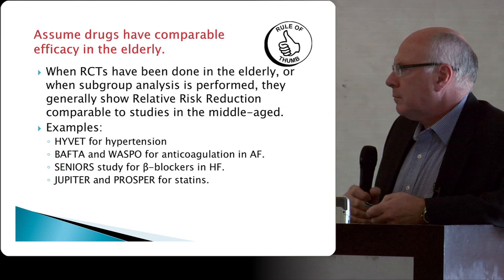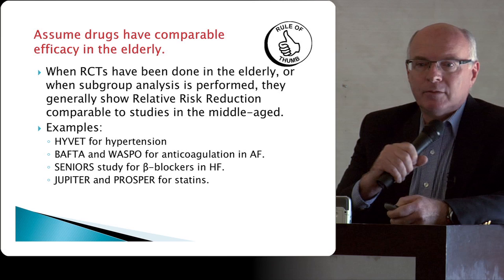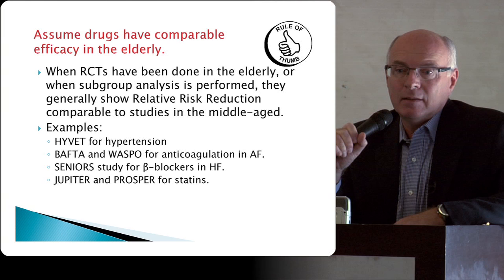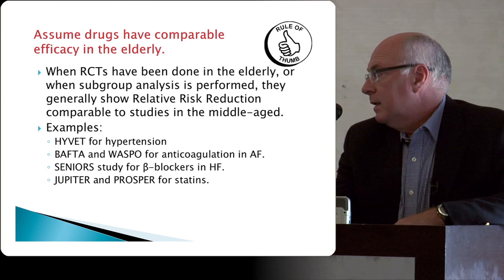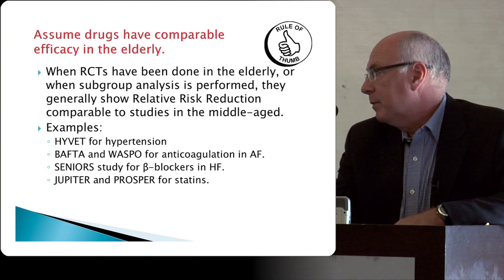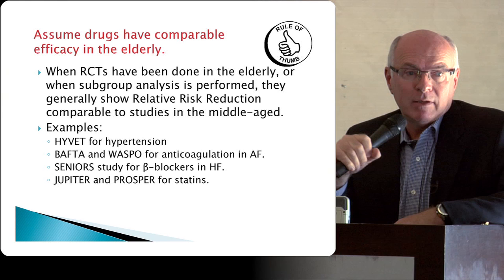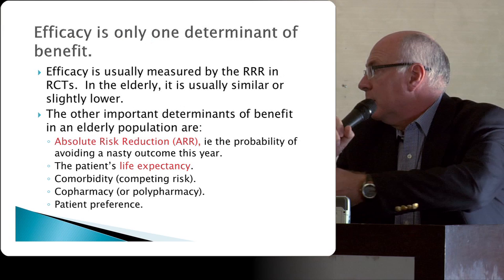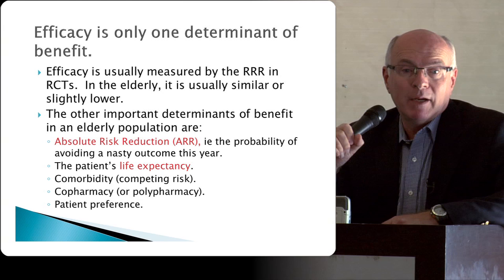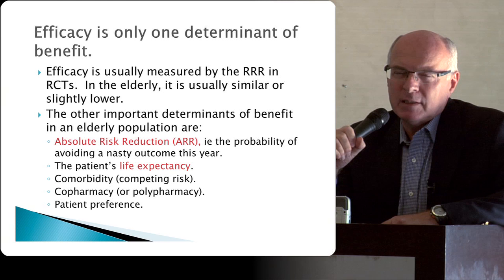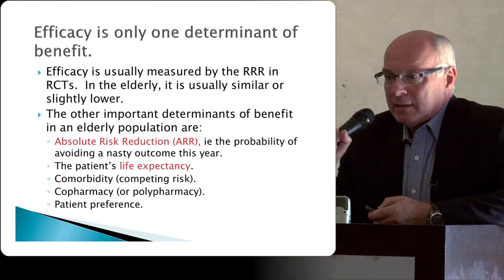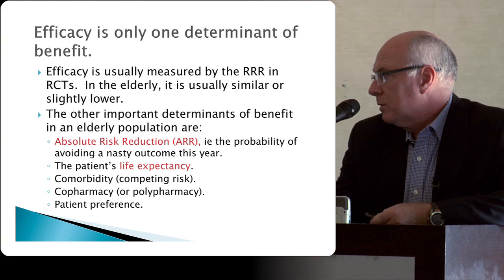I've heard it said that the elderly are an evidence-free zone where the rules don't apply, but that would be unfair and a mistake. Studies have been done on the elderly: HYVET in hypertension, BAFTA and WASPO for anticoagulation in atrial fibrillation, SENIOR for beta blockers in heart failure, Jupiter and PROSPER for statins. Inevitably these studies show that the efficacy of these drugs is the same in the elderly, expressed as relative risk reduction — usually similar or a little lower — but the absolute risk reduction is actually greater because the event rate is higher.